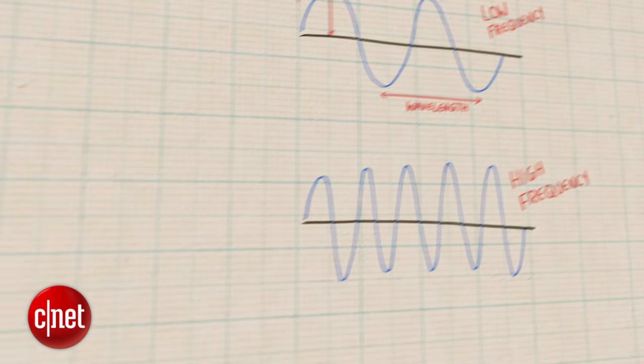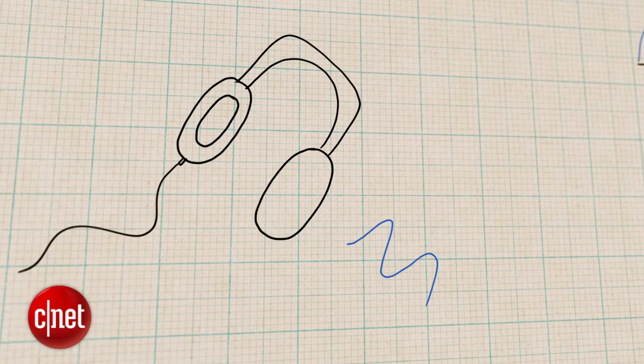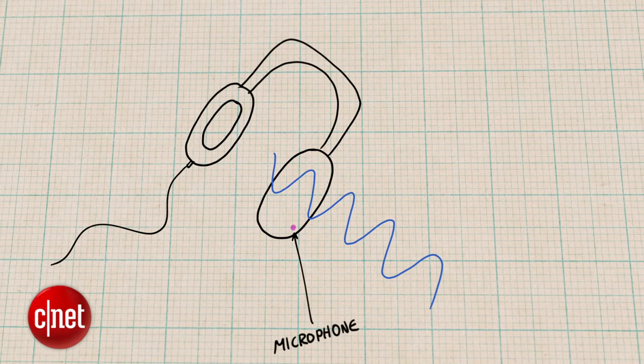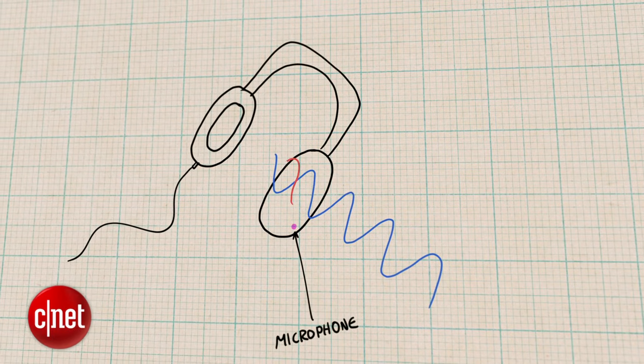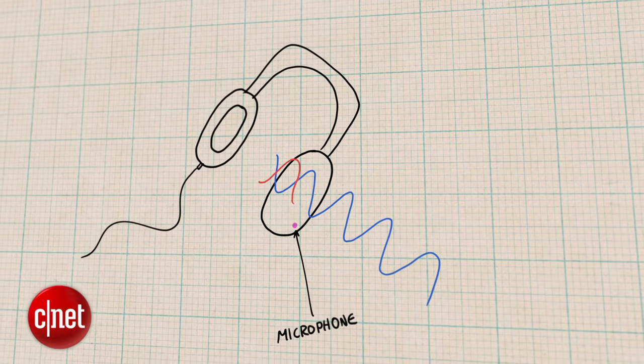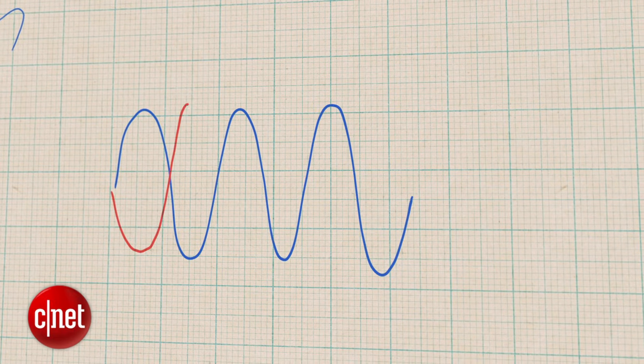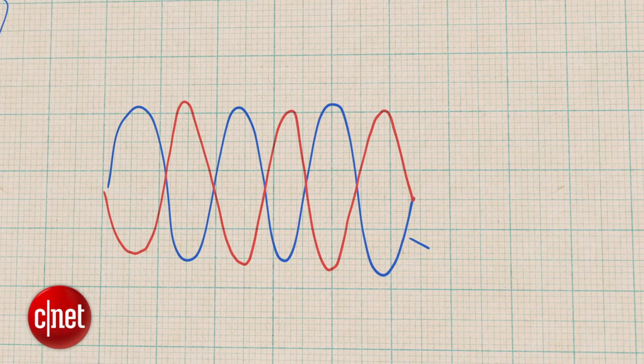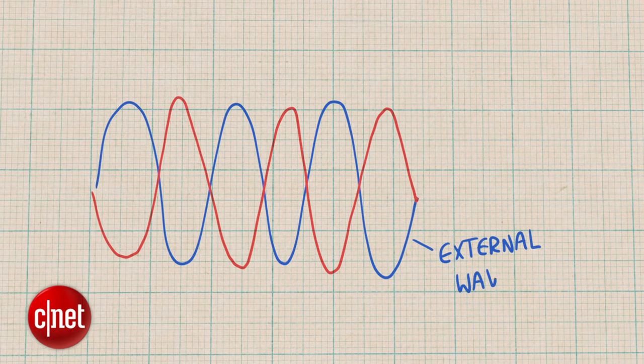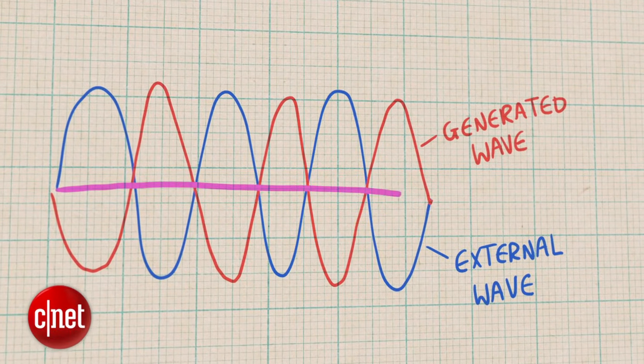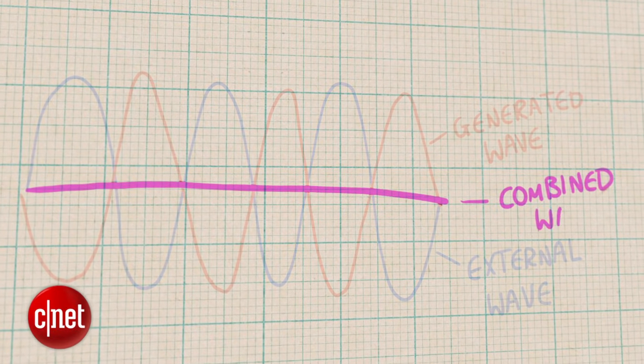Noise cancelling headphones effectively erase external sounds by using a microphone hidden in the headphones that listens to surrounding noise, then generates a sound wave that's out of phase, which means it has the opposite shape, and feeds that into your ears. The two waves cancel out in a process called destructive interference, which sees the wave generated by the headphones effectively acting as a sound eraser, resulting in you hearing less of the outside world.